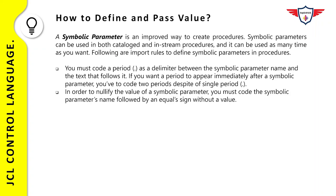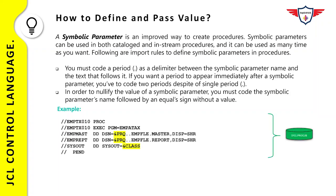Here are the important rules to remember when defining symbolic parameters in a procedure. First, you must code a period as a delimiter between the symbolic parameter name and the text that follows it. If you want a period to appear immediately after a symbolic parameter, you must code two periods — the first acts as a delimiter marking the end of the symbolic parameter name, and the second appears as a literal period. Second, to nullify the value of a symbolic parameter, code the symbolic parameter followed by an equal sign with no value.